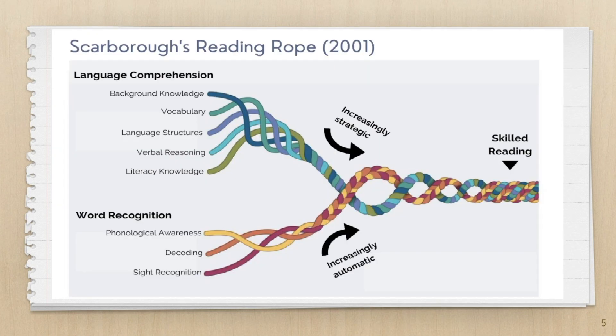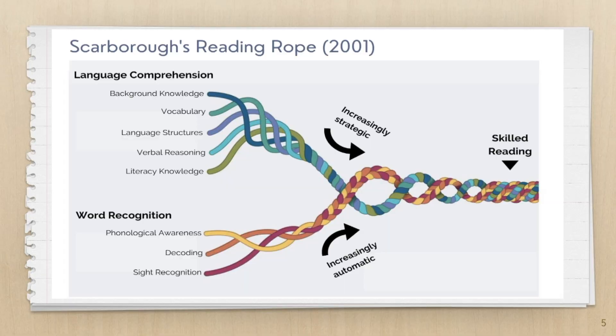The next research I'm going to reference is Scarborough's Reading Rope. This is a great representation of how we all learn how to read. We have the language comprehension strand and then we have the word recognition strand. Within that rope there are several different components that make up language comprehension and word recognition. Today we're going to spend time in the word recognition strand, specifically in decoding — the sound-letter relationship and its importance in how we become skilled readers.